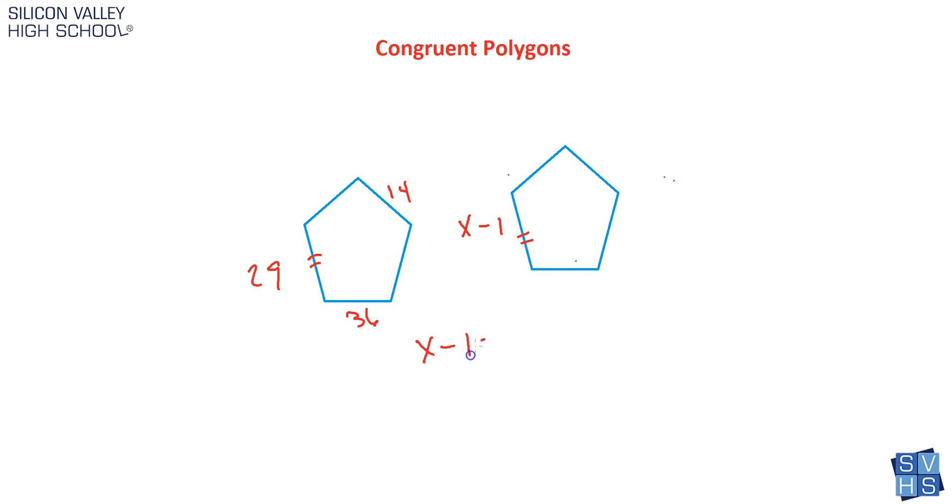Now I can just set them equal. If these are the same, then x minus 1 equals 29. Do a little math: plus 1 plus 1, x equals 30, and that is my answer. There could be units like inches or centimeters, but that's how you do it.